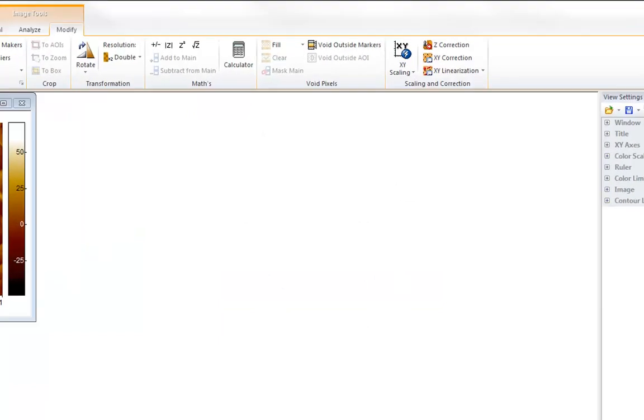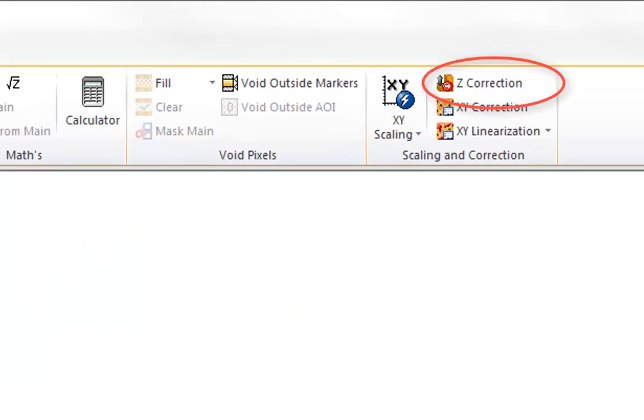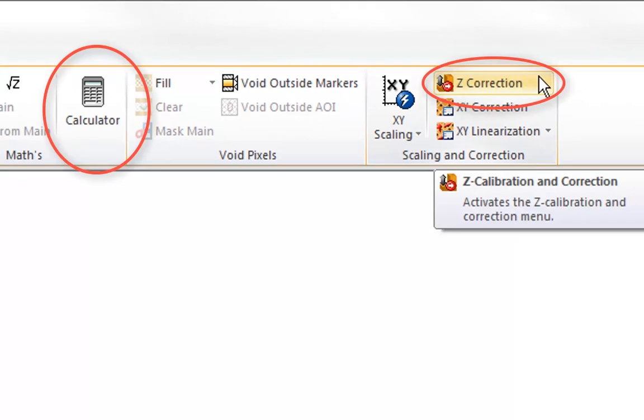It is possible to compensate for this using the Z calibration function or the image calculator in SPIP.